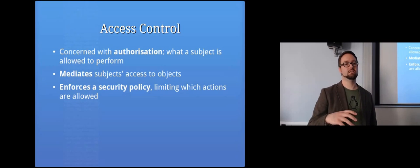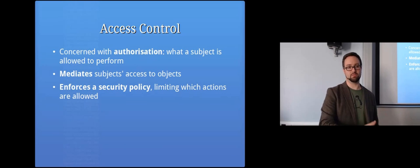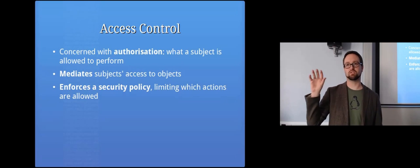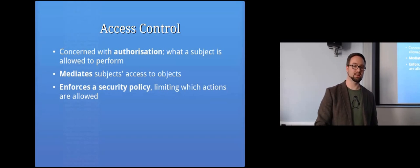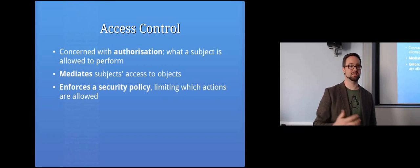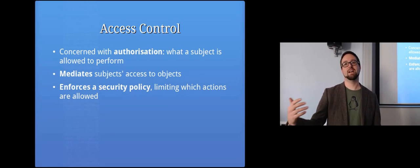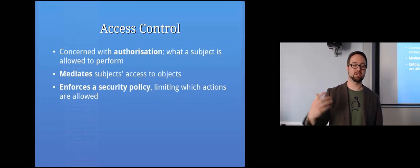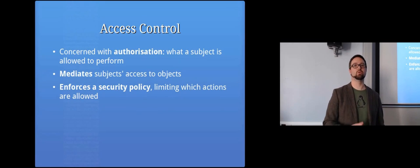Access control mediates a subject's access to objects. A subject is the person or thing doing something — in a computer system it might be a running process. When making access control decisions, we ask: is that subject allowed to access this object? Objects are mostly static resources like files, but a process can also be an object if another process is trying to connect to it. Accessing the network can also be described in these terms.